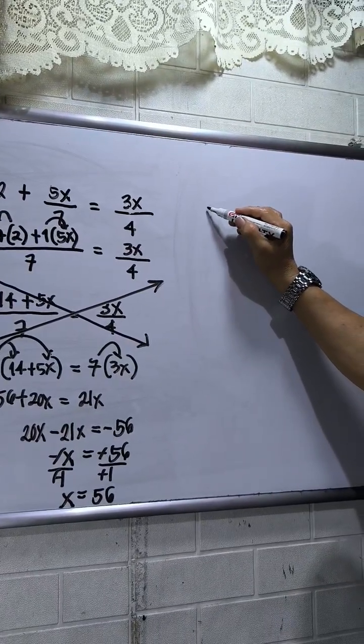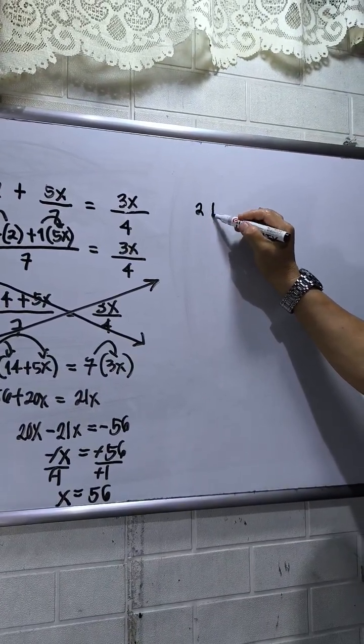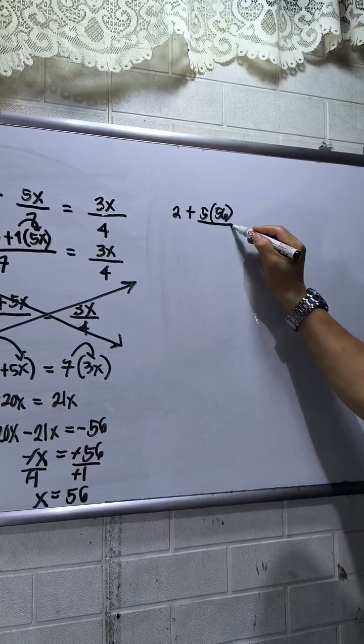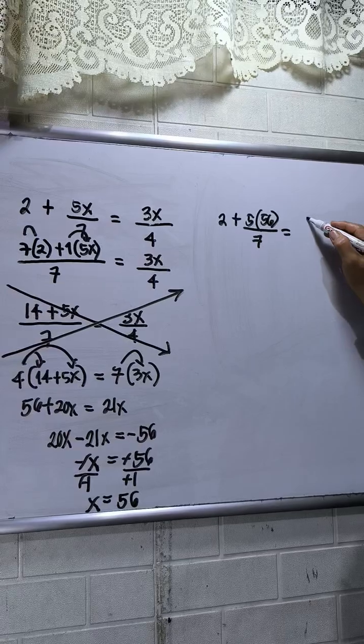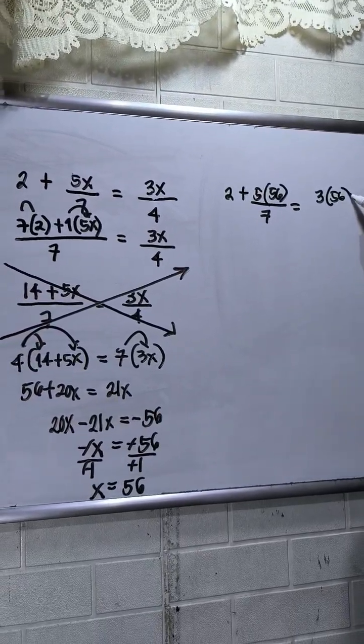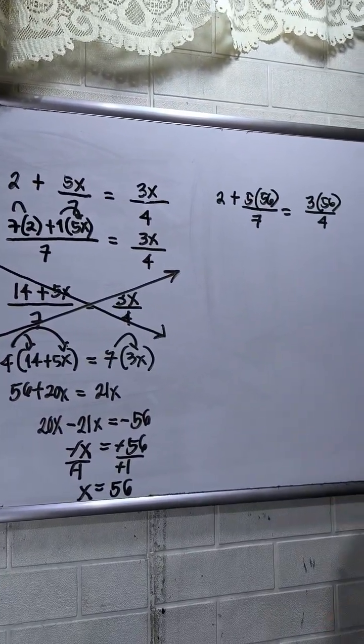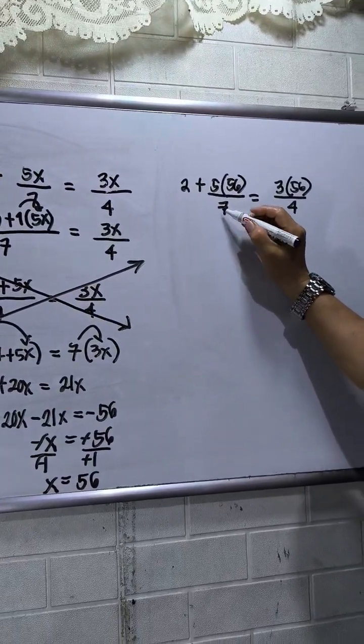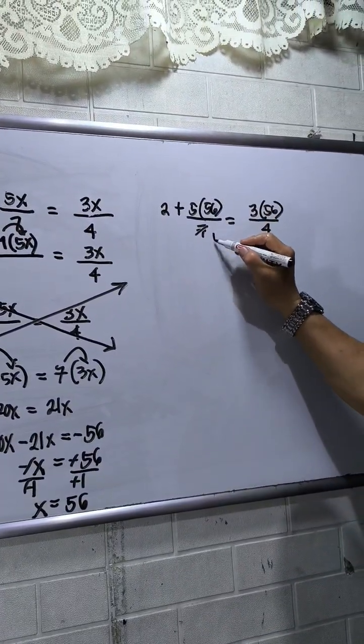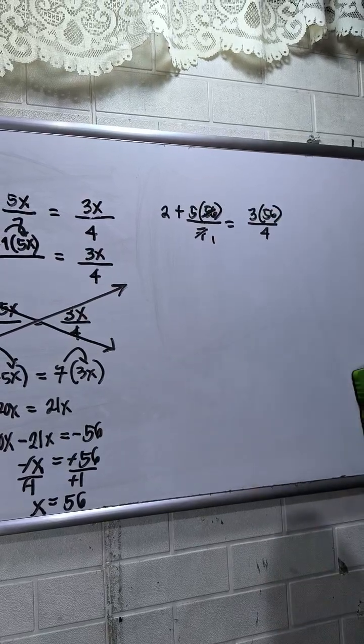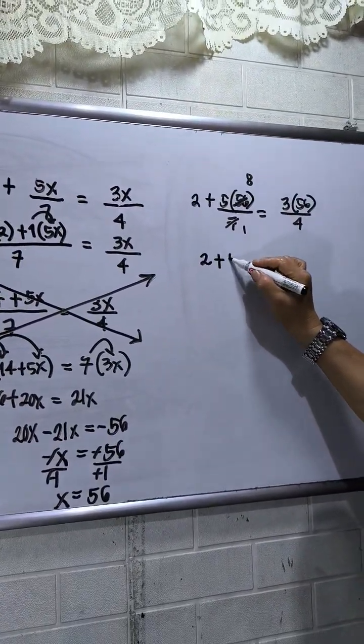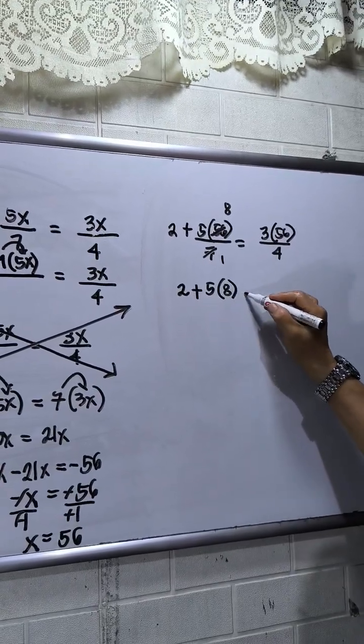So this will be 2 plus 5 times 56 over 7 equals 3 times 56 over 4. Okay, so 7 divided by 7, that will be 1. 56 divided by 7, that is 8. So I have now 2 plus 5 times 8.